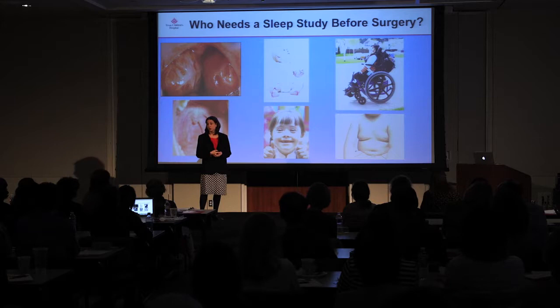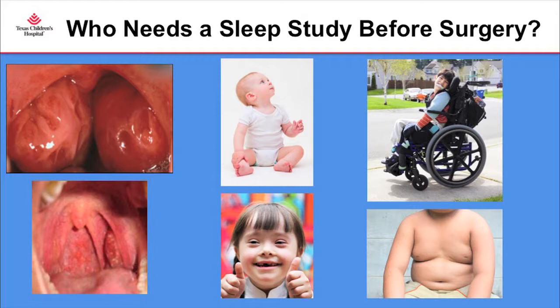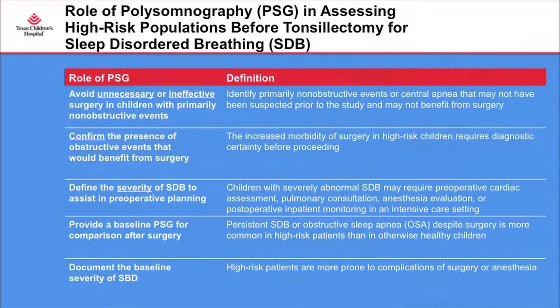Very young kids, less than two years of age, should get sleep studies given the high risk of surgery and anesthetic guidelines discouraging elective surgeries under age two. Syndromic kids, including Trisomy 21 — the AAP recommends a baseline sleep study at four years of age for Down syndrome kids — kids with neuromuscular problems including CP, and obese children at or above the 95th percentile on the growth curve should all get a sleep study.